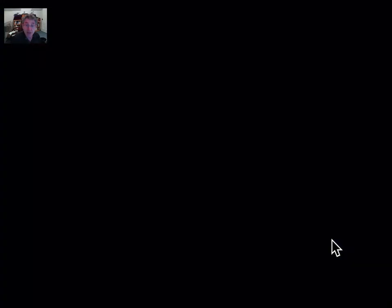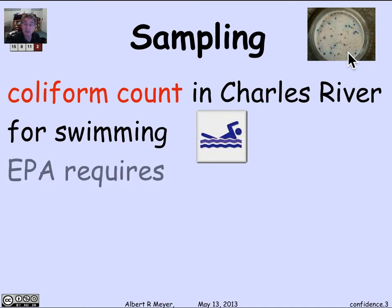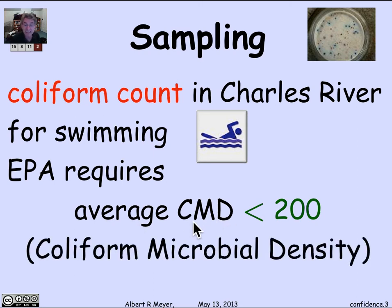Let's go ahead and do the example. I want to think about the possibility of swimming in the Charles. The Charles has a coliform count - coliform are undesirable bacteria associated with fecal matter. We want to know whether it's safe to swim. The Environmental Protection Agency requires that the average CMD, the coliform microbial density, is less than 200.